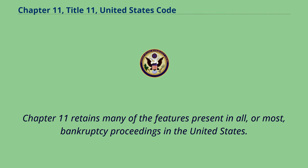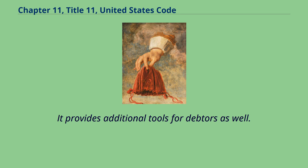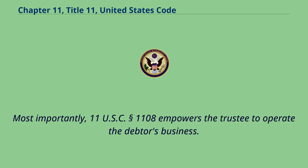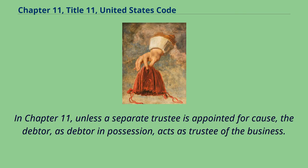Chapter 11 retains many features present in all, or most, bankruptcy proceedings in the United States, and provides additional tools for debtors. Most importantly, 11 U.S.C. Section 1108 empowers the trustee to operate the debtor's business. In Chapter 11, unless a separate trustee is appointed for cause, the debtor, as debtor in possession, acts as trustee of the business.